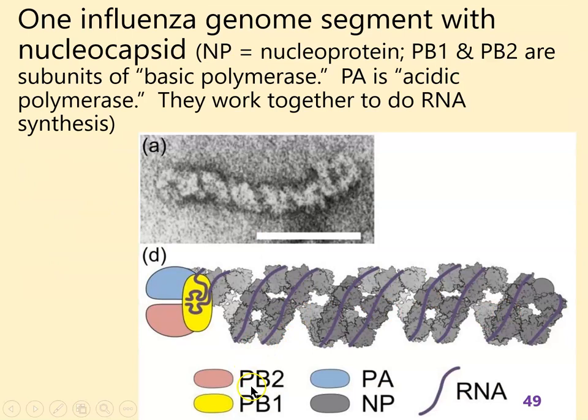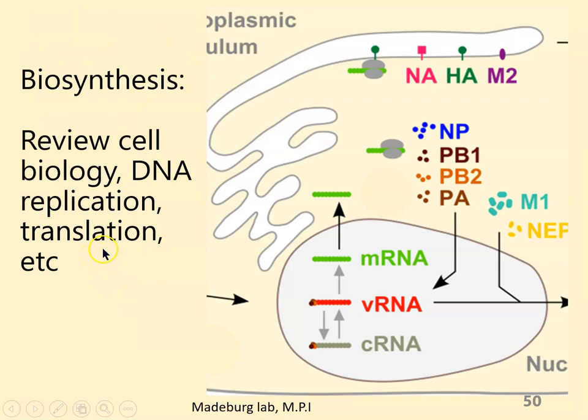The three enzymes are PB1, PB2, and PA — polymerase basic 1, polymerase basic 2, and polymerase acidic. The three of them work together to do all of the nucleic acid synthesis the virus needs.